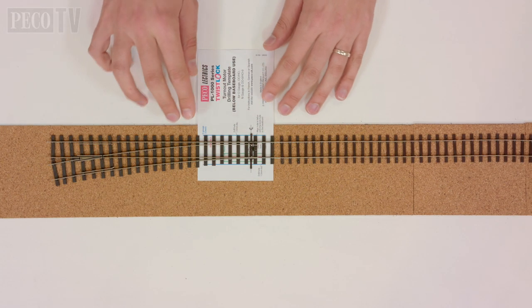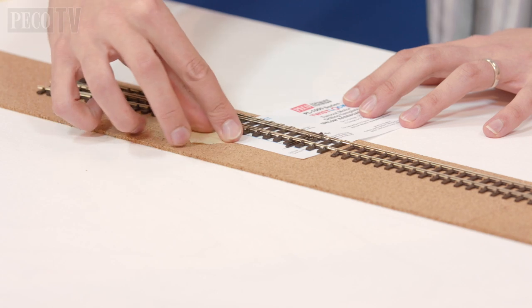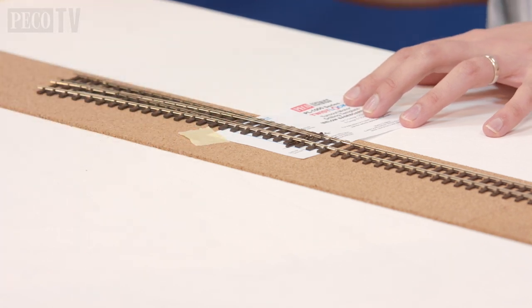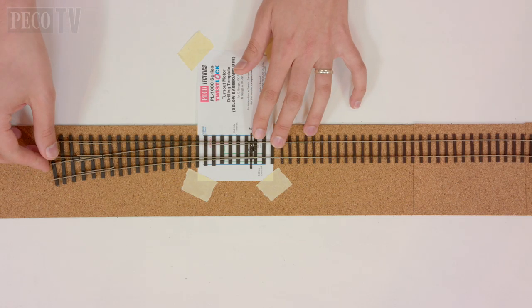Once in line with the guidelines on the template, fix it in place with some tape. Then remove the turnout and keep to one side.